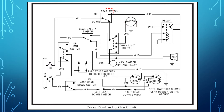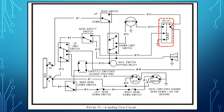The gear switch is a pilot-controlled switch that allows the pilot to raise and lower the landing gear from the cockpit. The relay is a remotely controlled switch which allows for controlling the high amperage current necessary to raise the landing gear with a lower amperage current.